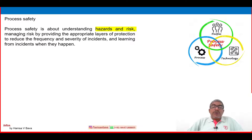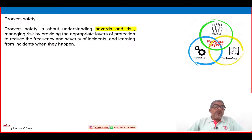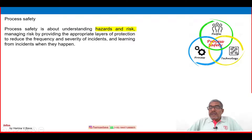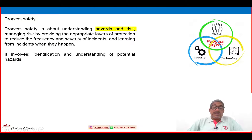Process safety involves managing risk by providing appropriate layers of protection to reduce the frequency and severity of incidents, and learning from incidents when they occur. It involves the identification and understanding of potential hazards, with a focus on people, process, and technology.